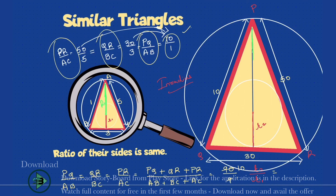Similarly, if I draw a circumcircle — a circle drawn outside the triangle — it will also have a radius. Let R2 be the radius of the bigger circumcircle and R1 be the radius of the smaller circumcircle. Then R2 upon R1 will always be equal to the ratio of their corresponding sides. So remember this result: when two triangles are similar, the circumradius ratio also equals the side ratio.